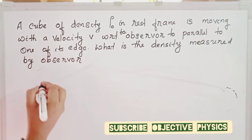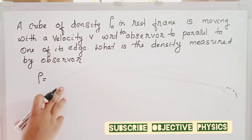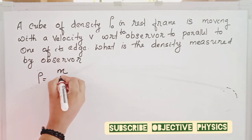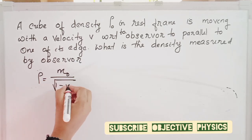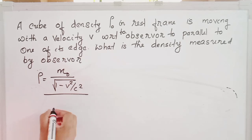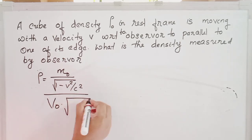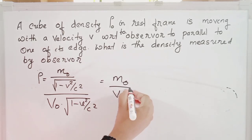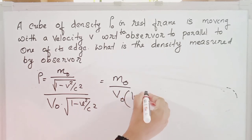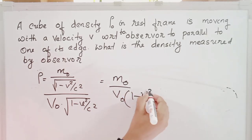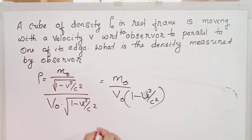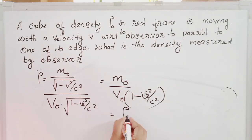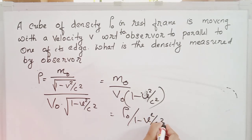Therefore, the density rho equals relativistic mass divided by relativistic volume: M₀ divided by √(1 − v²/c²), all divided by V₀ × √(1 − v²/c²). This equals M₀ by V₀ multiplied by 1/(1 − v²/c²). Since M₀/V₀ is the rest frame density rho-zero, we get rho = rho-zero divided by (1 − v²/c²).